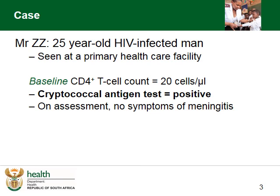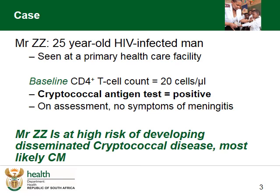With the new NDOH policy of reflex testing of CRAG on all patients with a CD4 less than 100, the blood result also shows that he is cryptococcal antigen positive, but he has no other symptoms. As outlined in module one, this confirms that Mr. ZZ has reactivated cryptococcus in his blood and he is at high risk of developing disseminated cryptococcal disease, most likely cryptococcal meningitis.